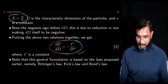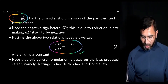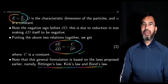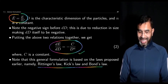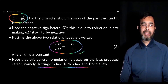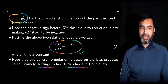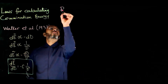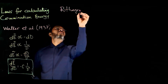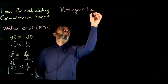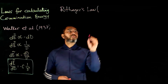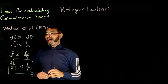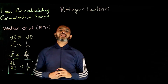This equation is a general formulation of the laws proposed much earlier. The three laws are Rittinger's law, Kick's law, and Bond's law. Let's take a look at these individual laws and their relation to this general formulation. For Rittinger's law, proposed in 1867, if you plug in n equals 2 in this equation you get Rittinger's law.